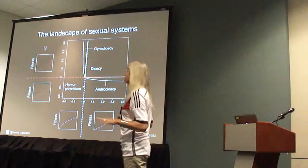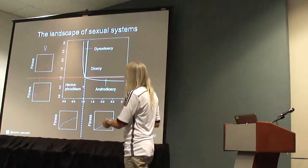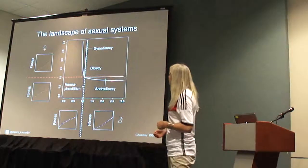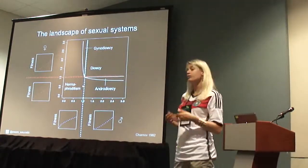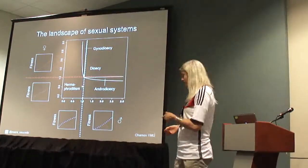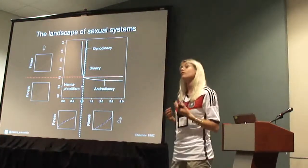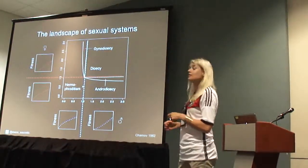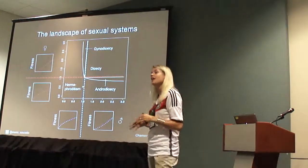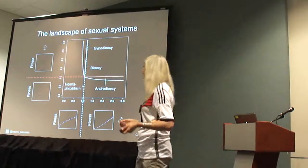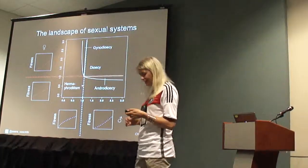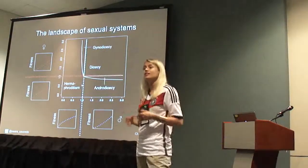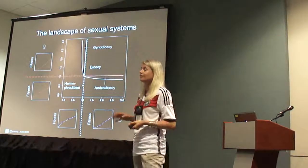We can see the landscape of sexual systems in this figure. On the outside, I've plotted the shape of the fitness gain curves for both female and male sex allocations. For example, dioecy is only evolutionarily stable when both the male and female fitness gain curves are accelerating, whereas hermaphroditism is stable if either the male or the female fitness gain curves are saturating. I want to point out that both gynodiecy and androdiecy have a very limited set of parameter space under which they can be evolutionarily stable. As we've heard earlier, gynodiecy is not uncommon in plants but almost completely absent in animals. In animals, we find androdioecy rarely, but in phylogenetically diverse taxa, such as nematodes, crustaceans, and possibly one fish.